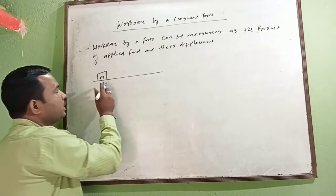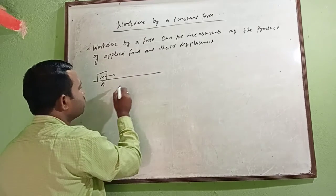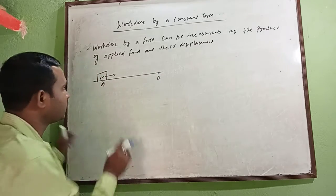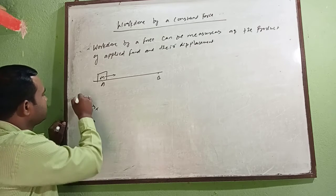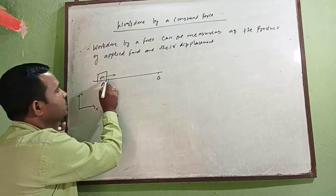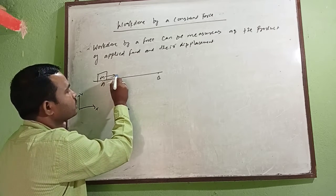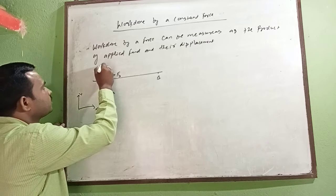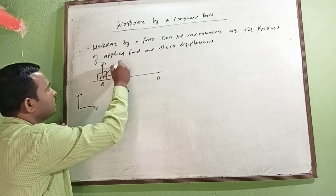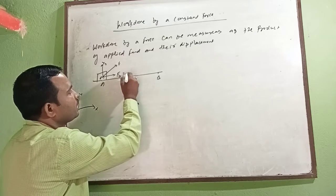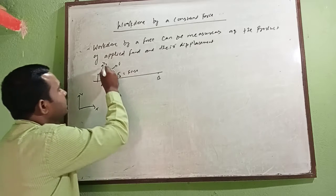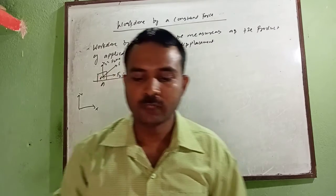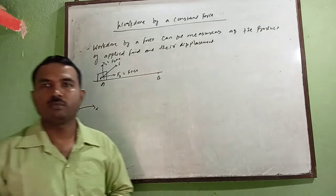Suppose we have an object of mass m, initially at point A, and it moves from A to B. If we consider the x-axis and y-axis, we can resolve the force into components: F_x = F cosθ along the x-axis, and F_y = F sinθ along the y-axis. Now we find the work done along the x-axis.